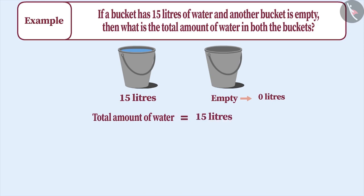That is, the value of 15 litres plus 0 litres has to be found. 0 is the additive identity. Can you tell me the reason?